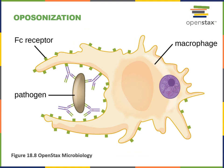Opsonization is when a defense protein marks a pathogen for phagocytosis. While complement proteins are capable of functioning in opsonization, antibodies also serve as labels for opsonization. The FC region of the antibody — the constant region — serves as a tag that is recognized by FC receptors on the surface of phagocytic cells like macrophages. When the FC receptors on the macrophage bind to antibodies on the surface of the pathogen, this will stimulate the mechanism of phagocytosis.